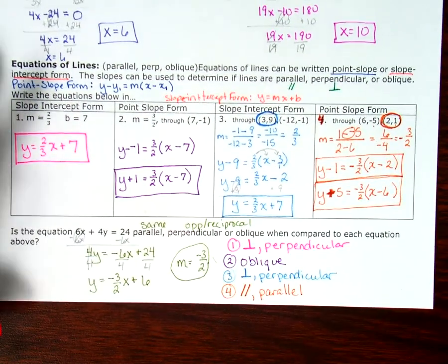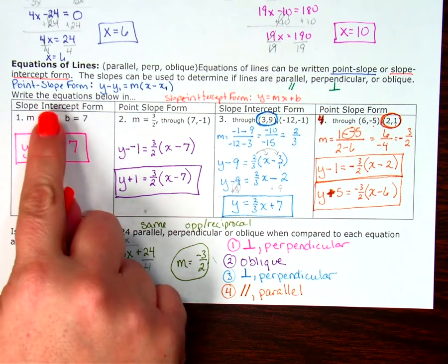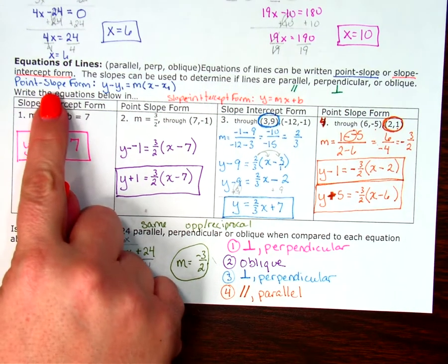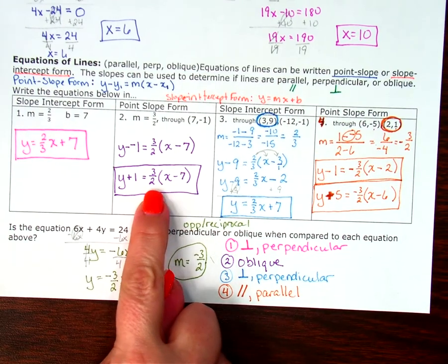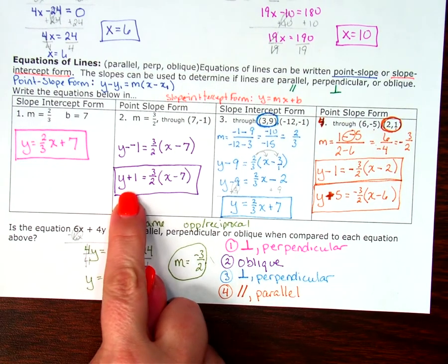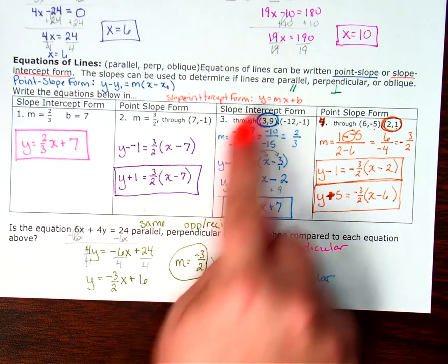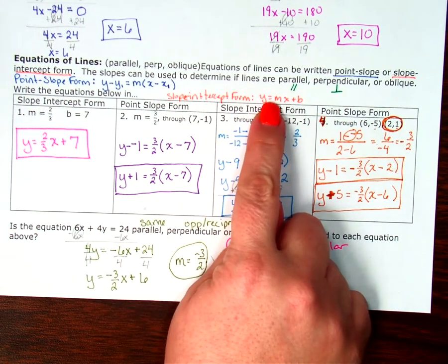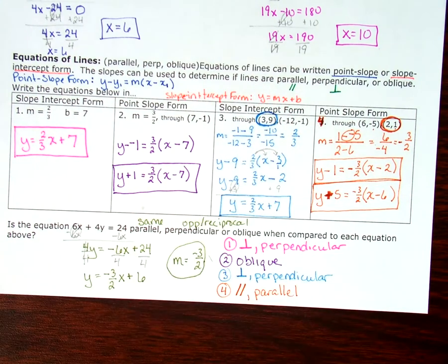Hopefully that helps if you're struggling with point-slope form and slope-intercept form. Remember: when you're in point-slope form, don't keep solving for y — that moves you into slope-intercept form. You really have to read which form it's asking you for. Thank you so much for watching.